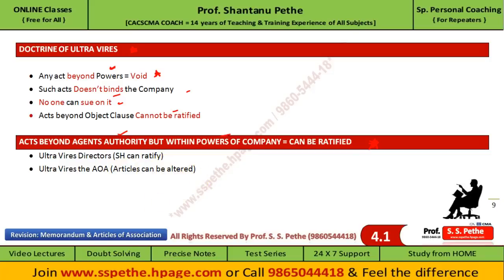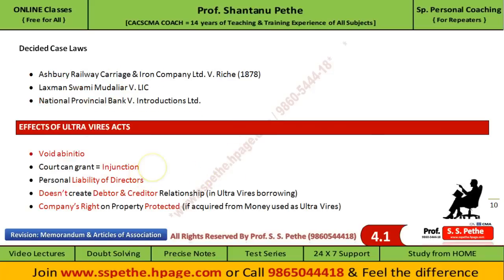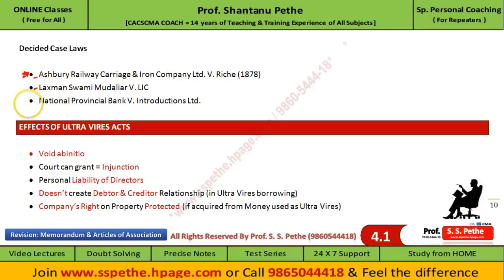The doctrine of ultra vires is very important — you must mention three case laws. First, Ashbury Railway Carriage and Iron Company Limited vs. Riche — the most important case law, which you must quote. Apart from this, Lakshman Swami Mudaliar vs. LIC and National Provincial Bank Limited. These three cases you must quote in the doctrine of ultra vires.